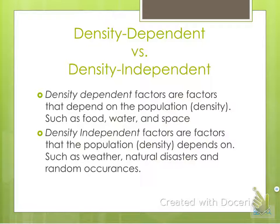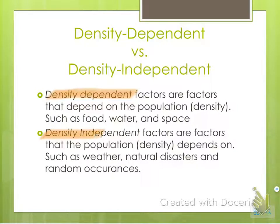Density dependent factors depend on the population — things like the amount of food, water, and space available. If there's a drought, there's limited water, which creates problems. The drought itself is density independent, but the resulting lack of water causes a density dependent issue. For density independent factors, think natural disasters or random occurrences — things that don't normally happen, like a tsunami.